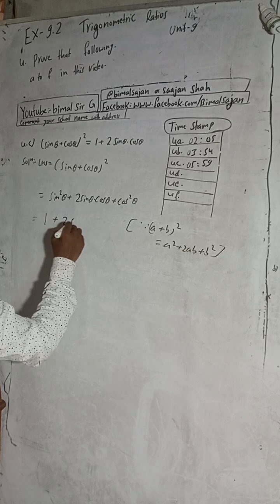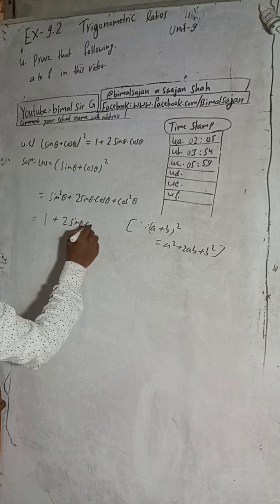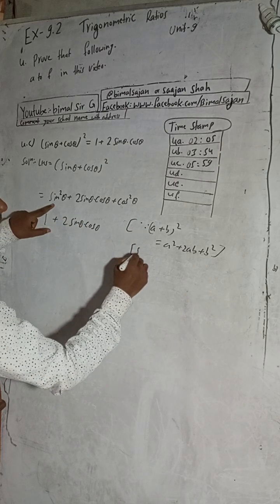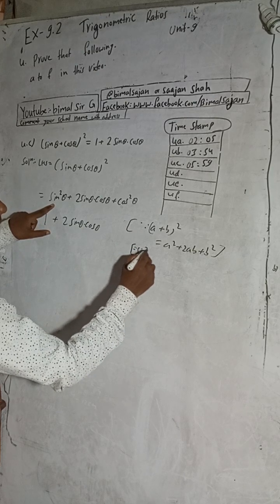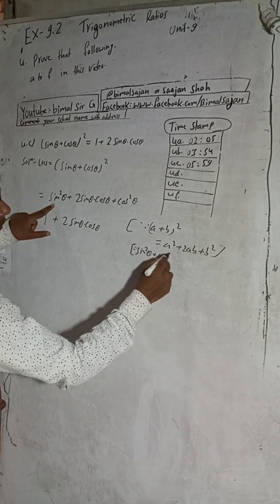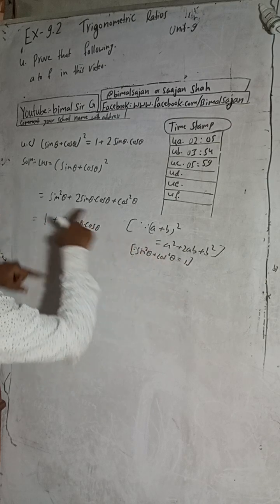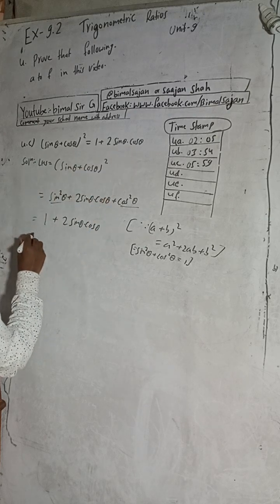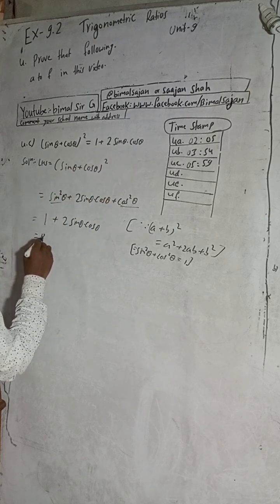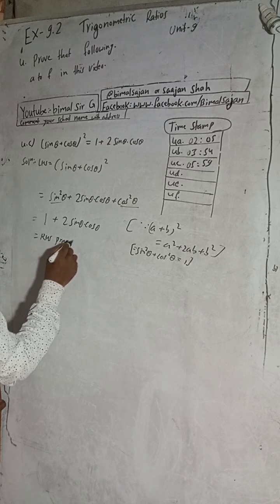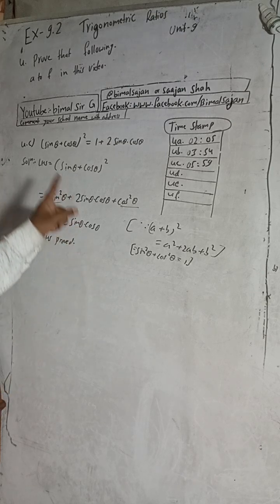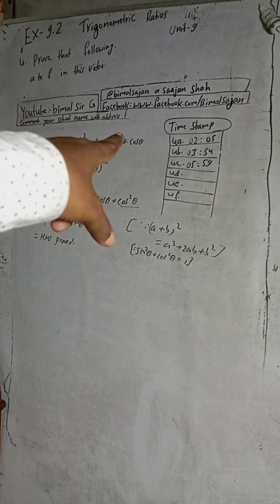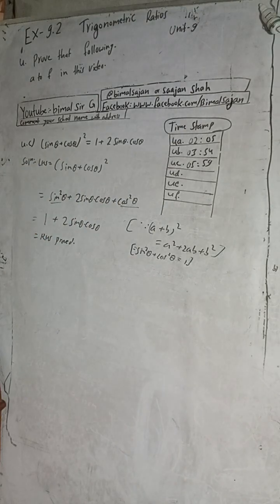Now sin²θ + cos²θ = 1, so we get 1 + 2sinθcosθ, which equals the RHS. Proved. This is the solution for 4c. The timestamp is 5 minutes 59 seconds.